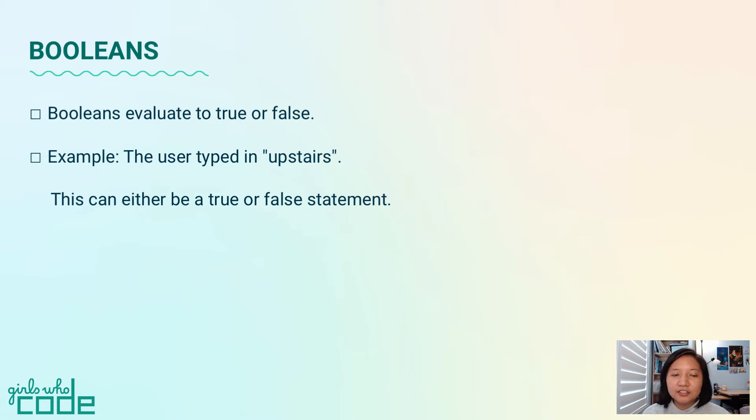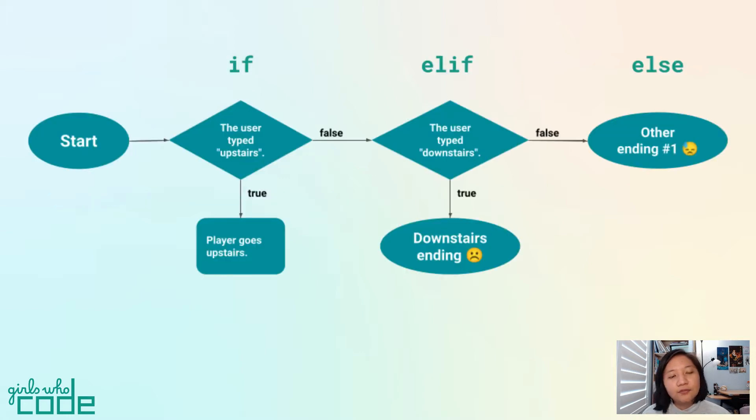For an action in a conditional to run, the boolean must be true. Let's take a quick look at our flowchart again. The program will run the first true statement.